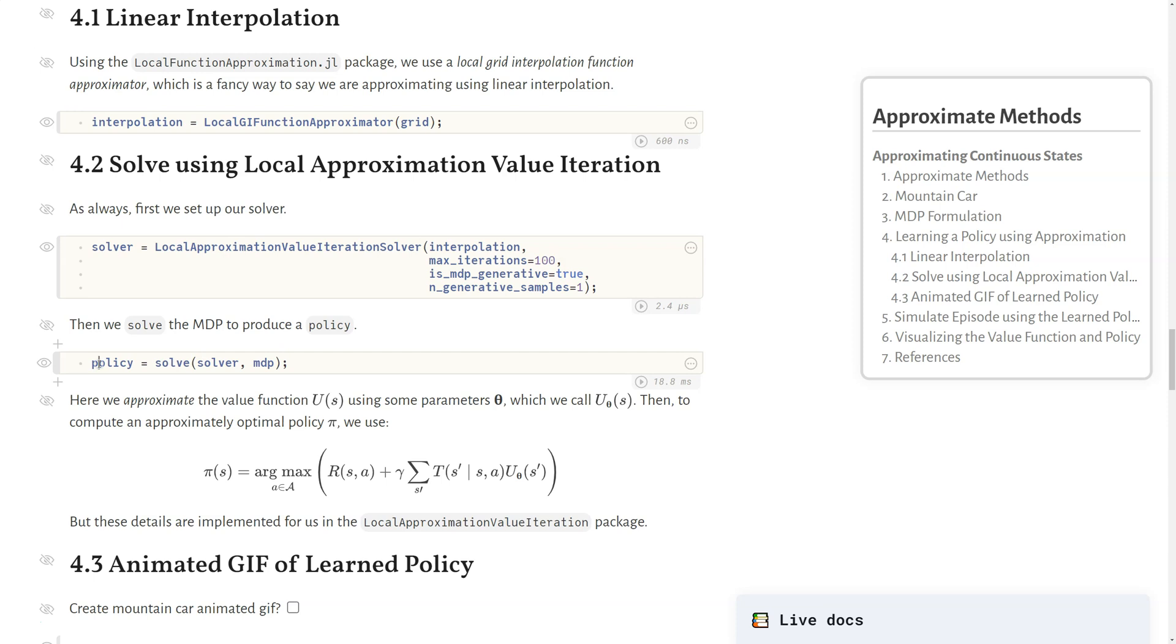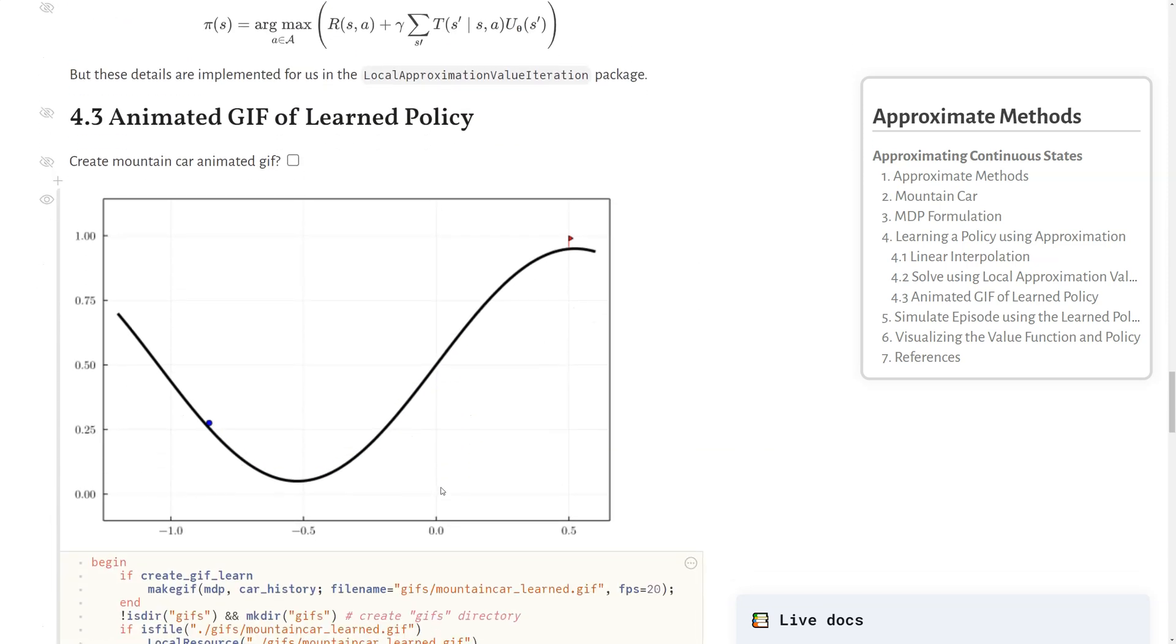We can solve the MDP to produce a policy like we do before. Here's some details if you're interested and I would refer to the references for more technical details about how this works. The idea is that we're going to approximate the value function here with some parameters, and in this case this is approximating it using that interpolated grid. Then we can compute the optimal policy within this setting using value iteration as we've seen before. Given a policy that we learned, we can animate how it plays out in simulation. In this case we can see the agent correctly makes it up the hill using its momentum and reaches the goal.